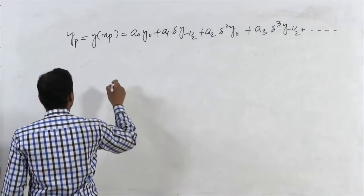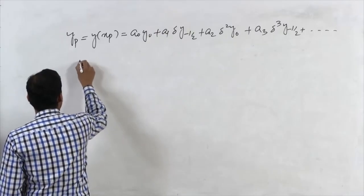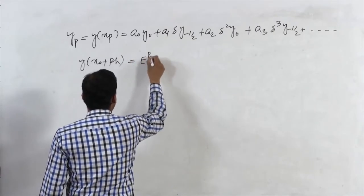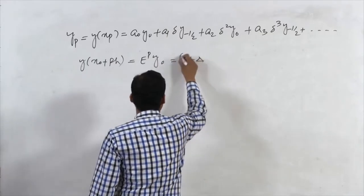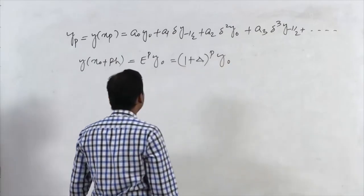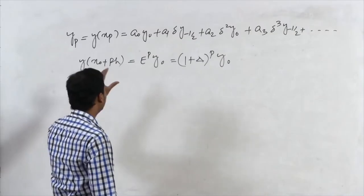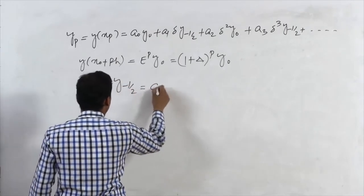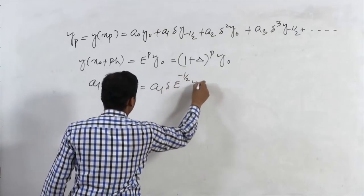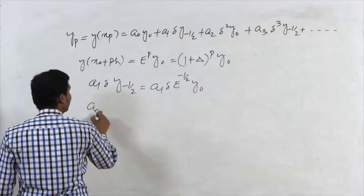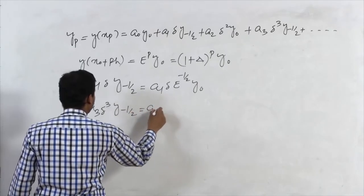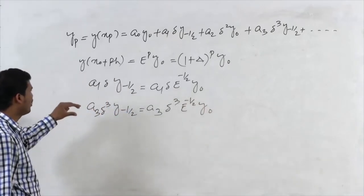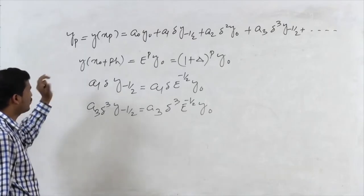If we express Y(Xₚ) as Y(X₀ + ph), it can be written as E^p·Y₀ = (1 + Δ)^p·Y₀. The right-hand side term A₁·ΔY(−½) can be expressed as A₁·Δ·E^(−½)·Y₀, and similarly A₃·Δ³Y(−½) can be expressed as A₃·Δ³·E^(−½)·Y₀.